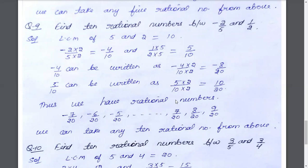Between minus 4 by 10 and 5 by 10, we can't get 10 numbers, so we increase the denominator. Multiplying by 2, we get minus 8 by 20 and 10 by 20. Now between these we have enough numbers. The 10 rational numbers are: 7 by 10, 6 by 10, 5 by 10, 4 by 10, minus 4 by 10, minus 3 by 10, minus 2 by 10, and we continue up to 1 by 20.